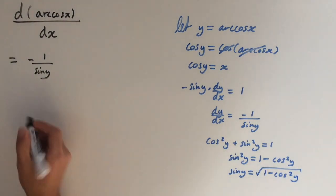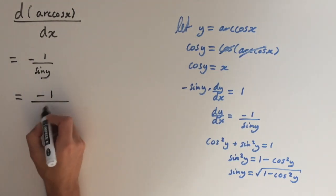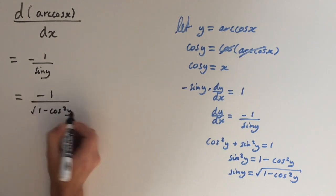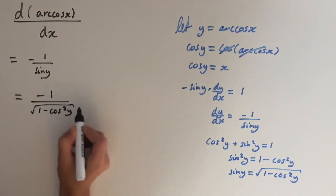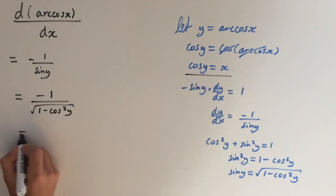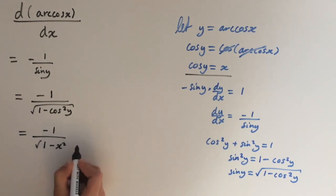So let's substitute this in. So this is going to give us minus 1 over square root of 1 minus cosine squared of y. And we know that cosine y equals x. So the last step is substitute in for cosine y. So this gives us minus 1 over square root of 1 minus x squared.